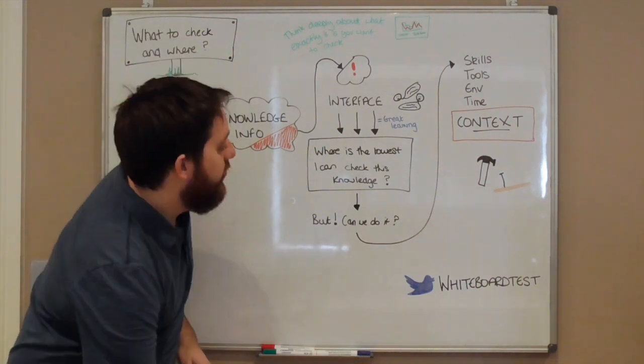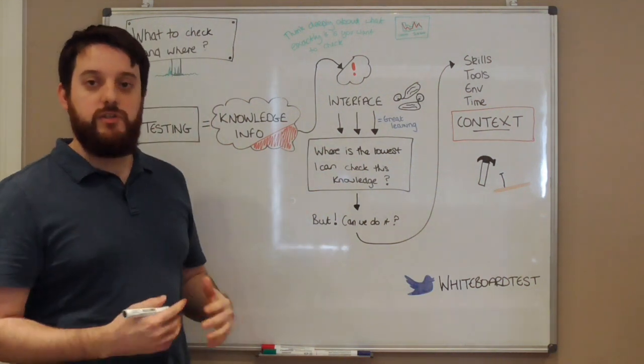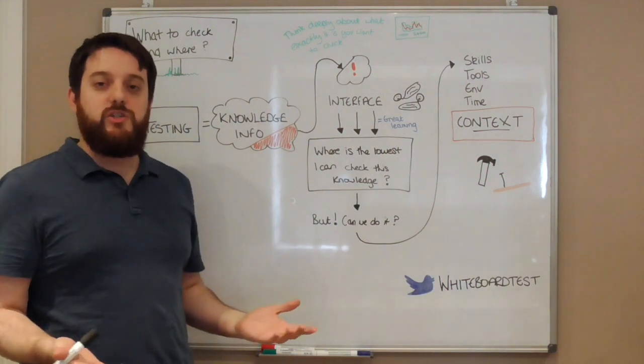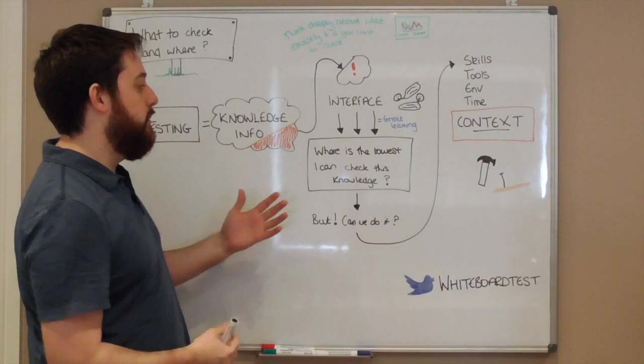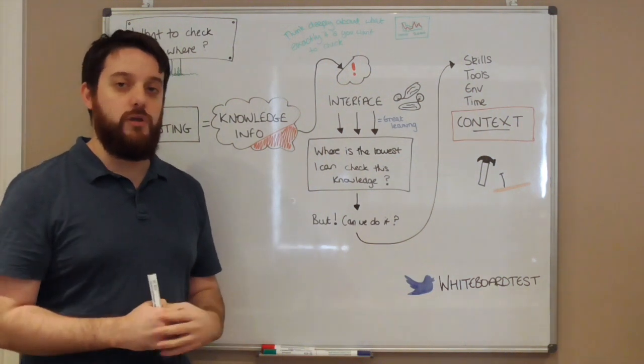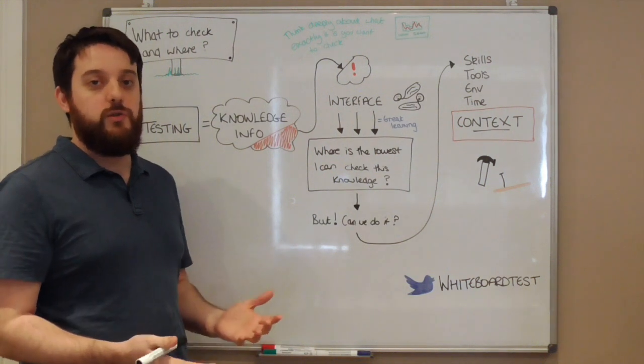We have to work out where it's best to check this knowledge. Once we've established this, once we've had these conversations and we've got a lot more information, we can now think, yeah, but can we actually do it? You know, we've established that yes, we should do this at the unit level or at the API level. But do we actually have the skills and the people and the knowledge to actually do this? So this is the context now.